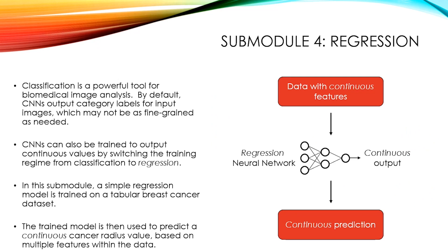Submodule 4, our final submodule, is regression. Classification is a powerful tool for biomedical image analysis, but by default CNNs output category labels for input images, which may not be as fine-grained as needed. CNNs can also be trained to output continuous values by switching the training regime from classification to regression. In this submodule, a simple regression model is trained on the tabular breast cancer data set, and the trained model is then used to predict a continuous cancer radius value based on multiple features within the data.